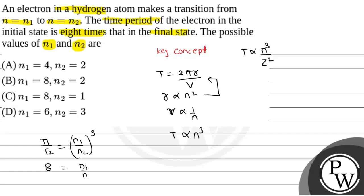So, I can say 8 is equal to n1 by n2, the whole cube. Taking cube root, you will be getting 2 is equal to n1 by n2. From here, you get n1 is equal to 2 times n2.